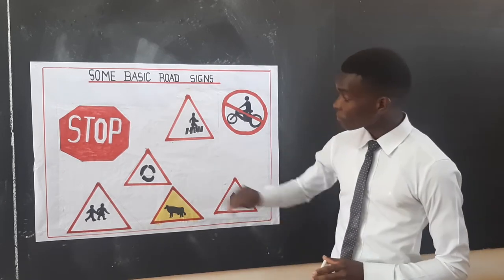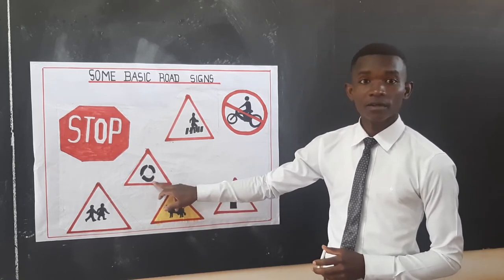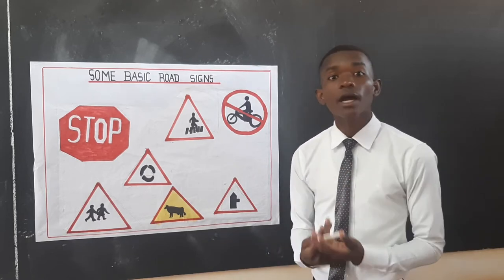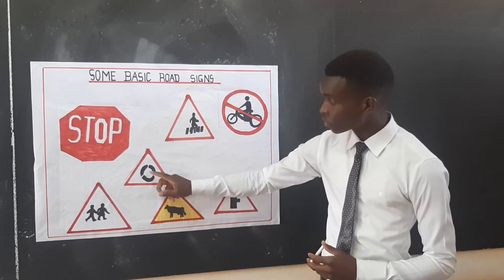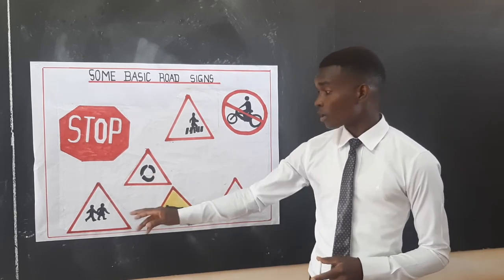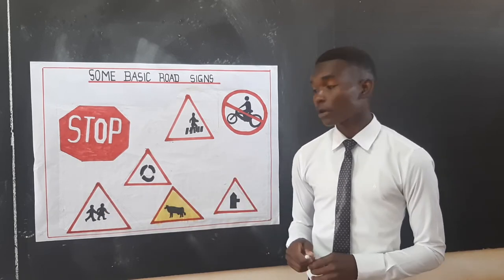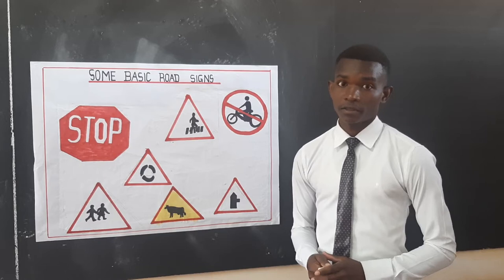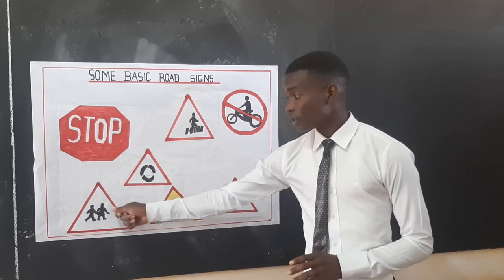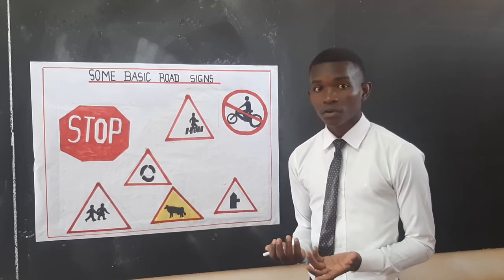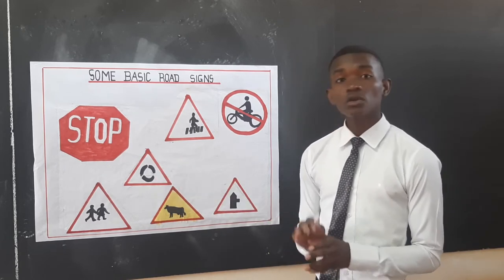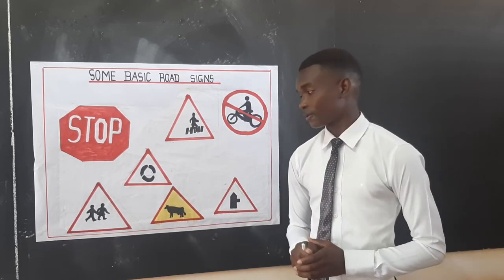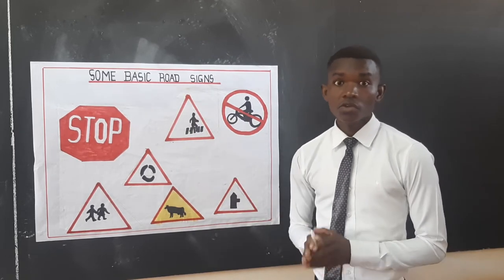Apart from that one, we have this sign in the middle here. This one simply shows that ahead of you there is a roundabout. Apart from this one, we also have this other sign where we see figures holding each other and moving. This sign simply means that there are children crossing, so you need to be careful. Especially when you see that one — children, we don't know what they will do. So it's up to you to slow down and observe. If there is no child crossing, that's when you can go ahead and pass. Whenever you see these signs, you need to reduce your speed.